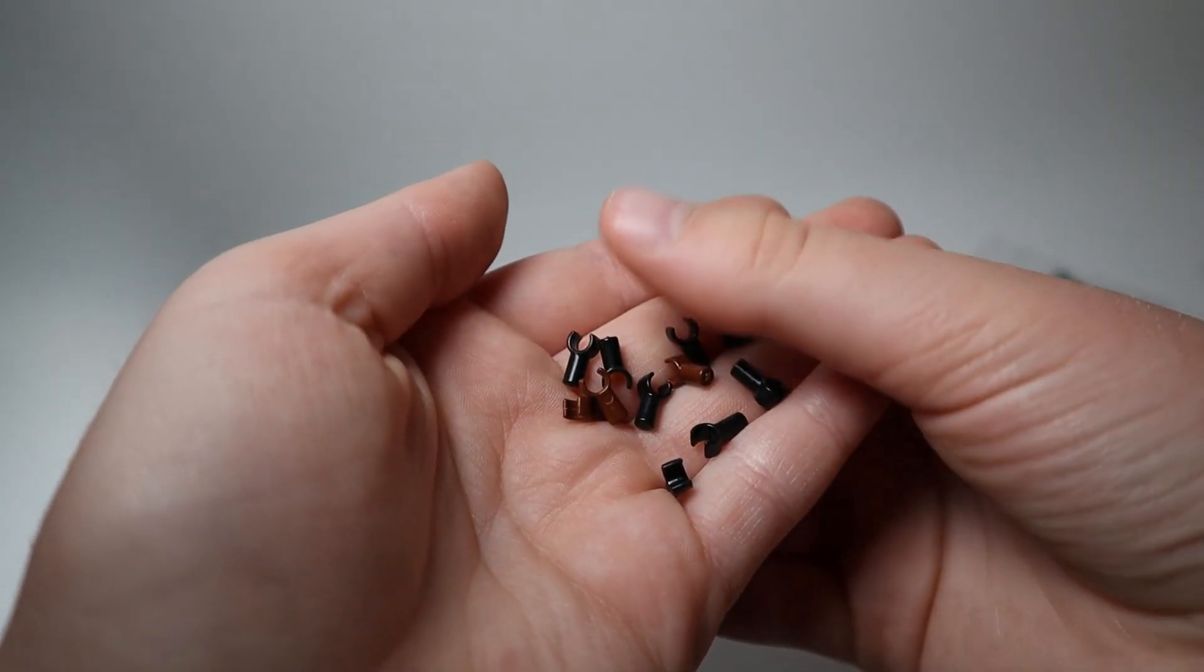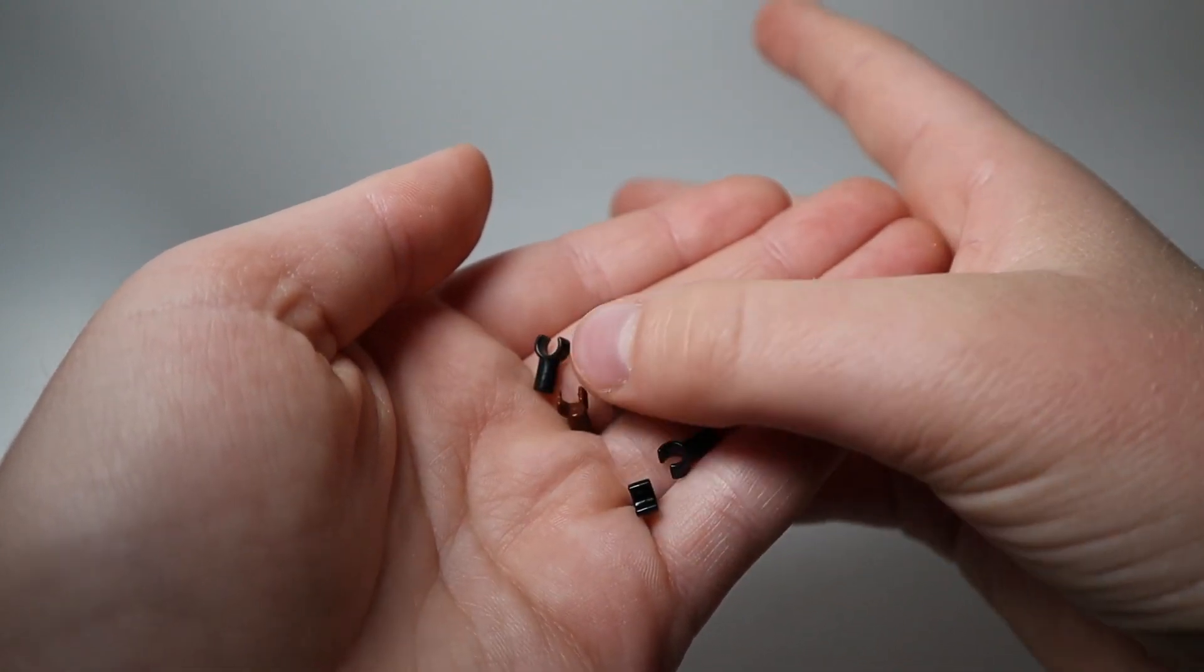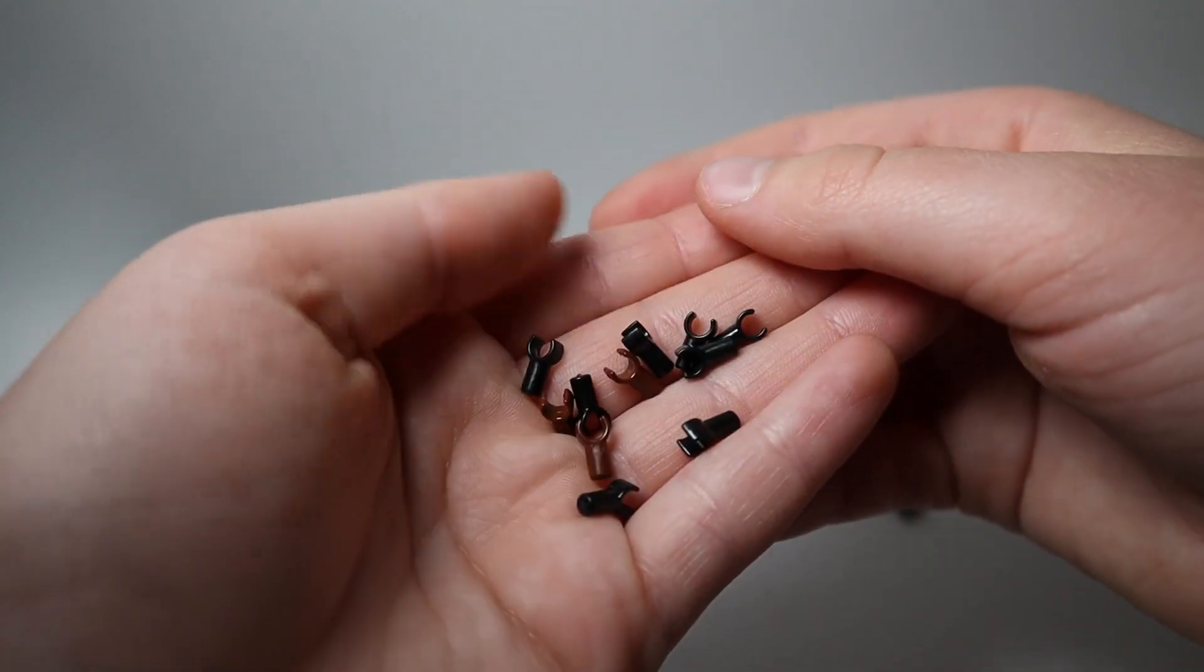And then my brother also got a bunch of these monopods. Some of them for, I believe, machine gun handles, which are the brown ones. And then the black ones just for random uses. They can be pretty useful sometimes.